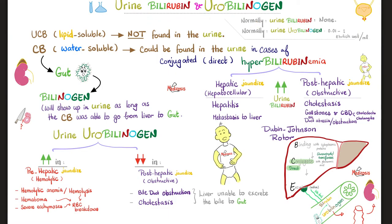Now to the most important slide of the video: urine bilirubin and urine urobilinogen. Normally, there should be no bilirubin in the urine. As for urine urobilinogen, it should be between 0.01 and 1 Ehrlich unit per ml of urine. Since unconjugated bilirubin is lipid-soluble, you will not see it in the urine. As for conjugated bilirubin, this is the one you can see in the urine — but again, this is a pathological finding, not normal.